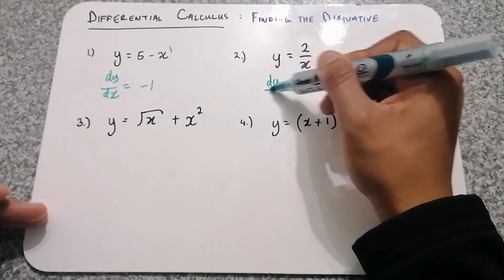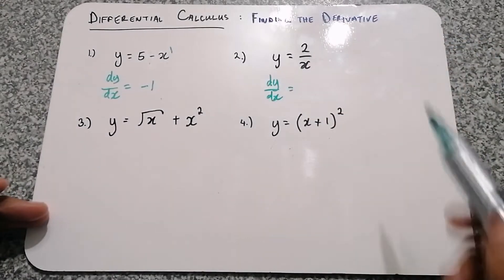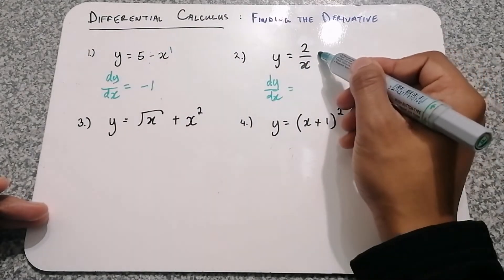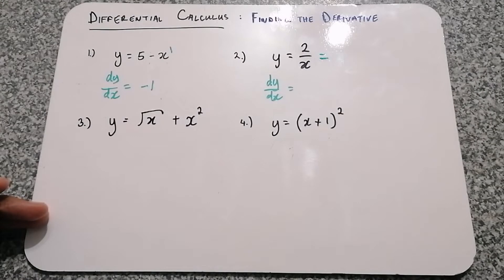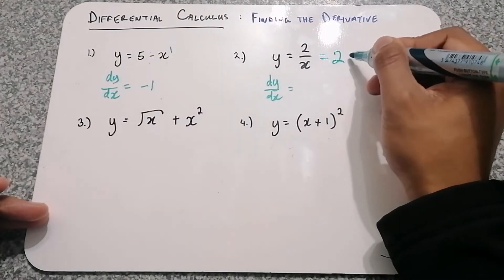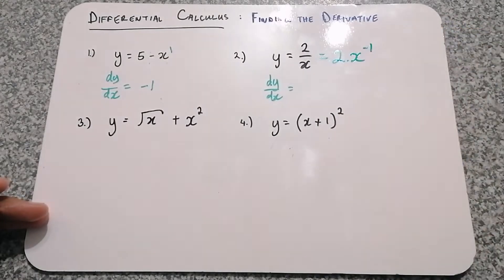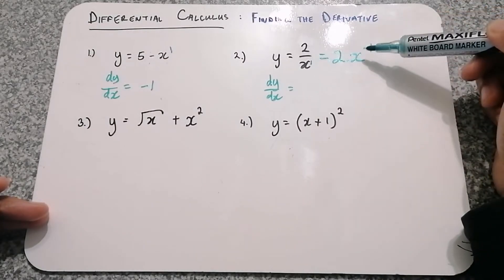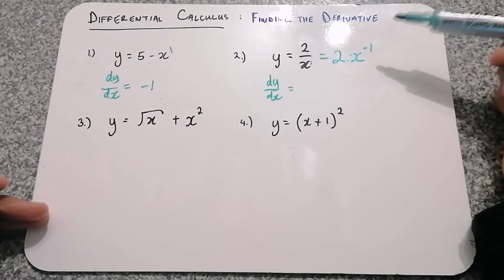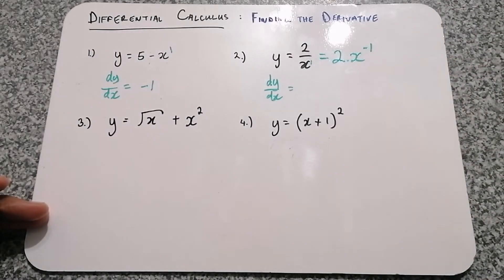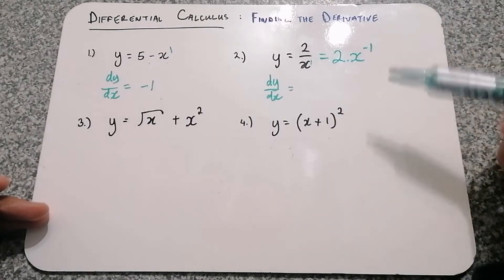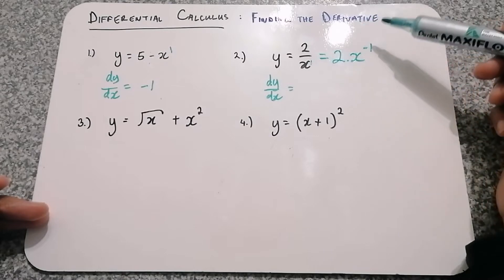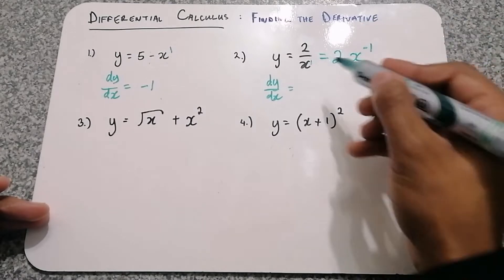The derivative of y with respect to x for question 2. Before taking the derivative, I first want to write it in a different way. I'm going to write that as 2 times x to the power of negative 1, basically taking x to the power of 1 to the top so it becomes negative 1. That's one of our exponent laws. Now we take the derivative by multiplying the exponent with the number in front, then decreasing that exponent by 1.